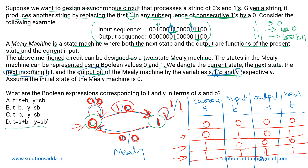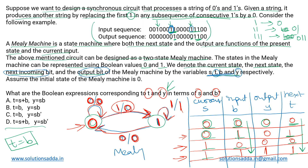Now we have to find the corresponding values of t and y in terms of s and b. From the table: when s=0, b=0, t=0; when s=0, b=1, t=1; when s=1, b=0, t=0; when s=1, b=1, t=1. In column b we have 0,1,0,1 and in column t we also have 0,1,0,1, so we can simply say t = b. For output y: when both are 0, y=0; when s=0,b=1, y=0; when s=1,b=0, y=0; only when s=1,b=1, y=1. So we can say y = s AND b.